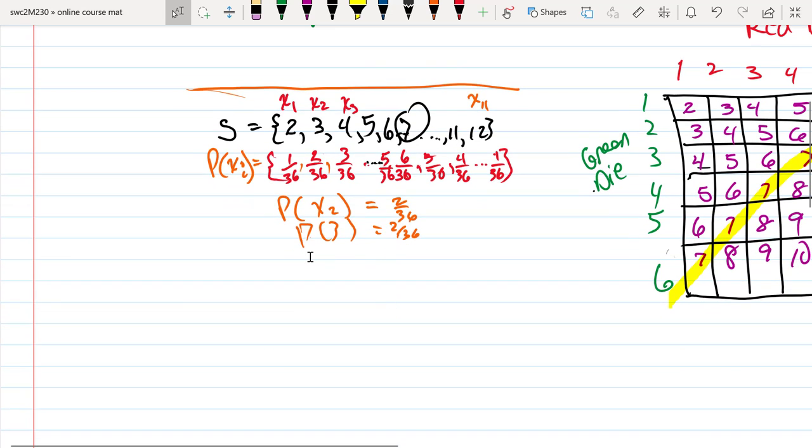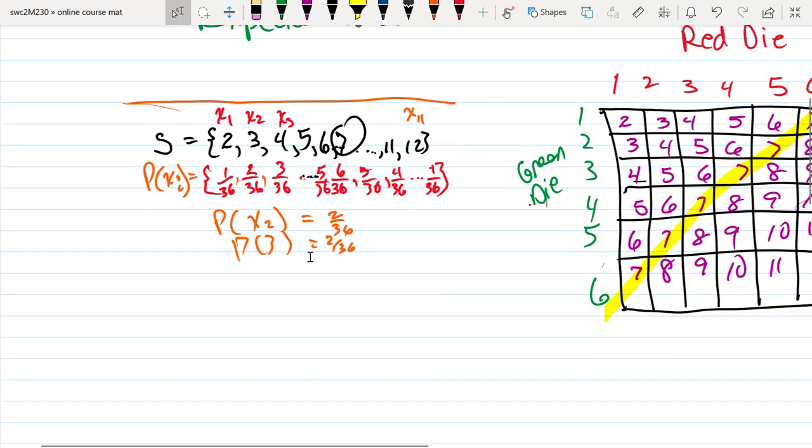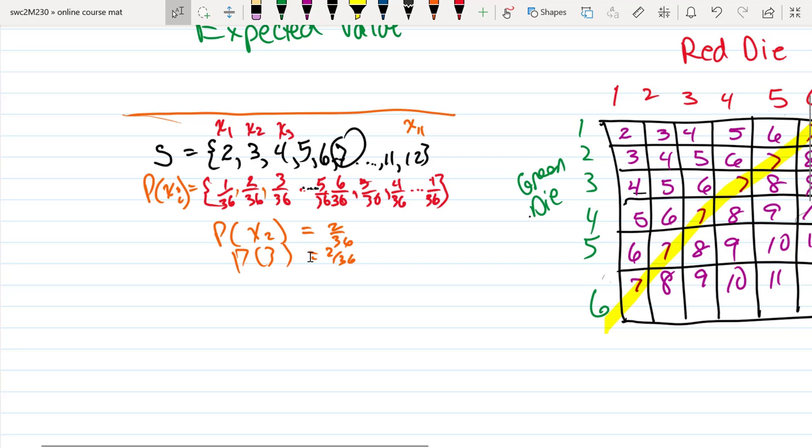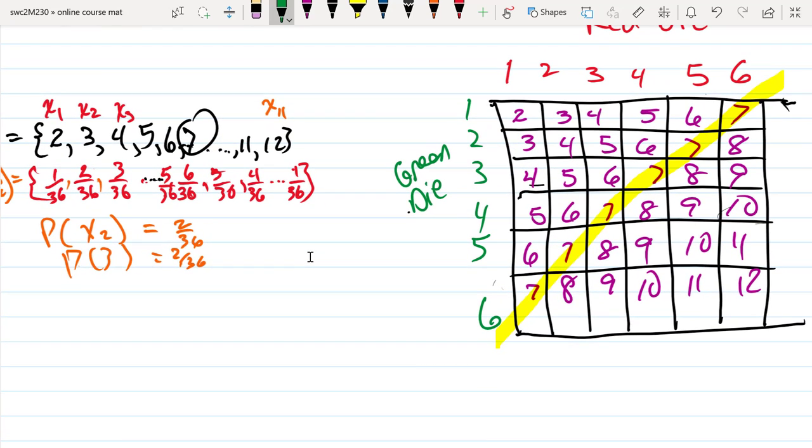In the previous example, we looked at what happens when we take a green die and a red die. We roll them and come up with a value. The smallest value could be 2.